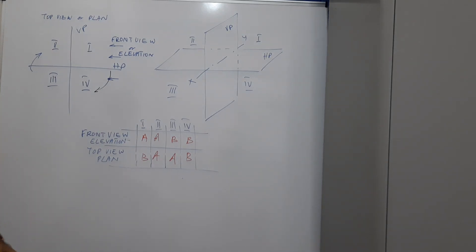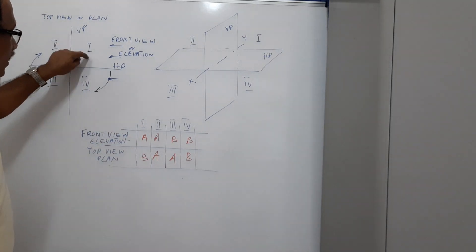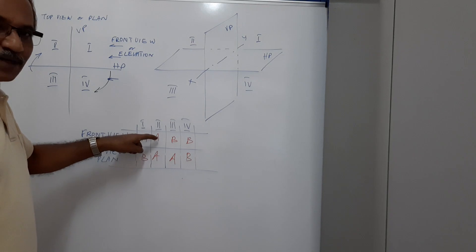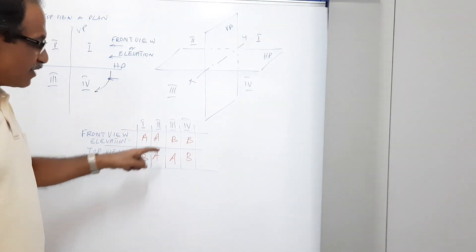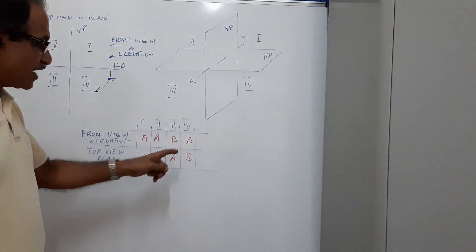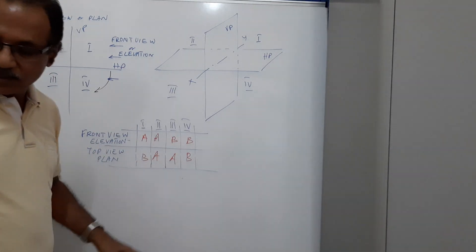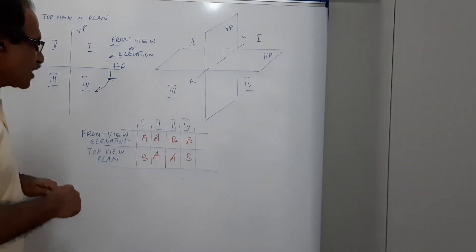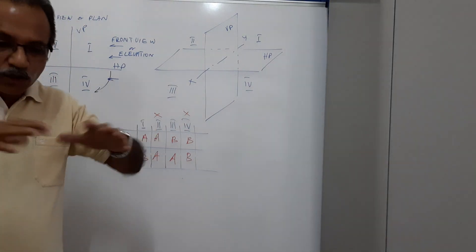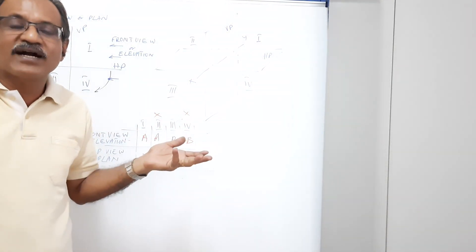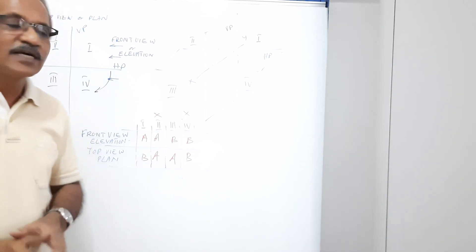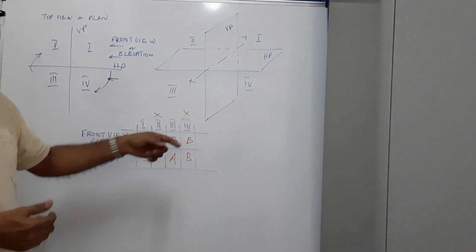Summary: when the object is in the first quadrant, elevation is above XY and plan is below XY. In the second quadrant, both are above XY. In the third quadrant, plan is above XY and elevation is below XY — the reverse of the first. In the fourth quadrant, both are below XY. Notice that the second and fourth quadrants cannot be used, because when you draw the object, the two views overlap, making it impossible to identify what is what.